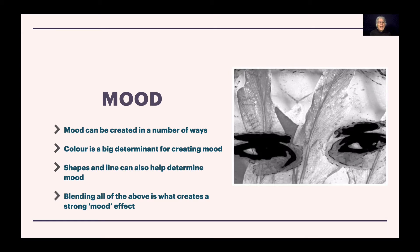Welcome back. Now we're going to discover what kind of mood you like. Moods can be created in a number of ways. Color is a big determinant for creating mood. For example, yellows and oranges are often associated with happiness and lightness and excitement. Purples are associated with grief and tranquility. There's all kinds of associations made with colors.